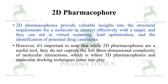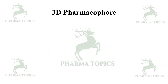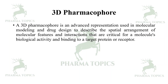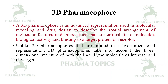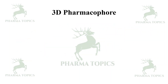A 3D pharmacophore is an advanced representation used in molecular modeling and drug design to describe the spatial arrangement of molecular features and interactions critical for a molecule's biological activity and binding to a target protein or receptor. Unlike 2D pharmacophores, which are limited to two-dimensional representation, 3D pharmacophores take into account the three-dimensional structure of both the ligand and the target.